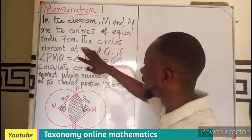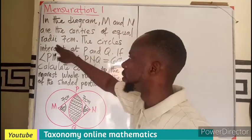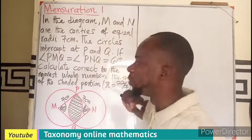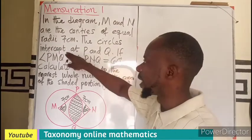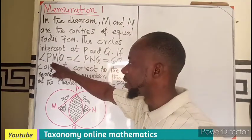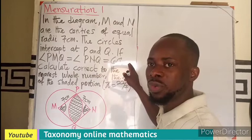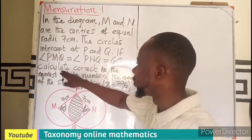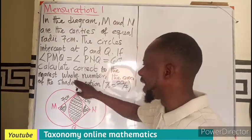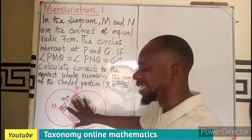In the diagram, M and N are the centers of equal radii of 7 cm. The circles intercept at points P and Q. If the angles produced at the centers are all equal to 60 degrees, we have to calculate, correct to the nearest whole number, the area shaded in this diagram.